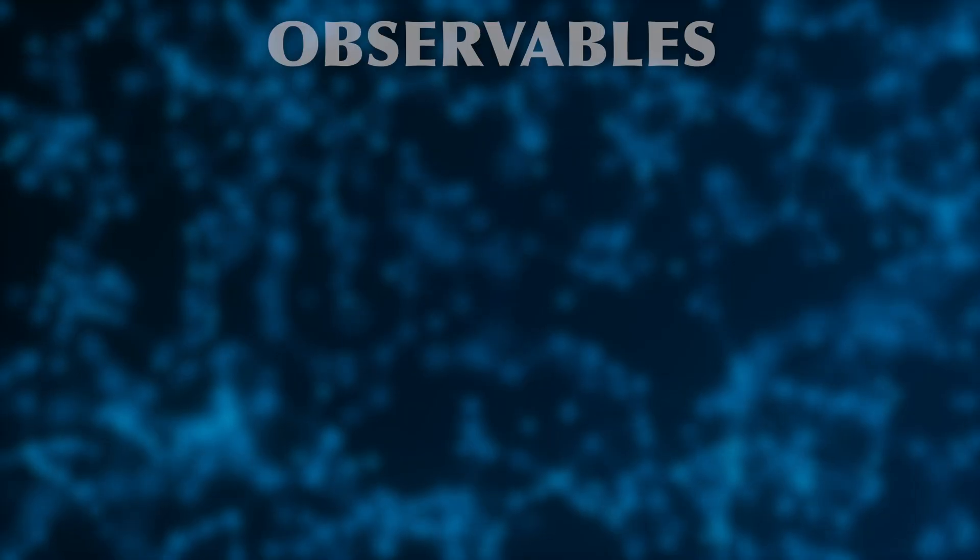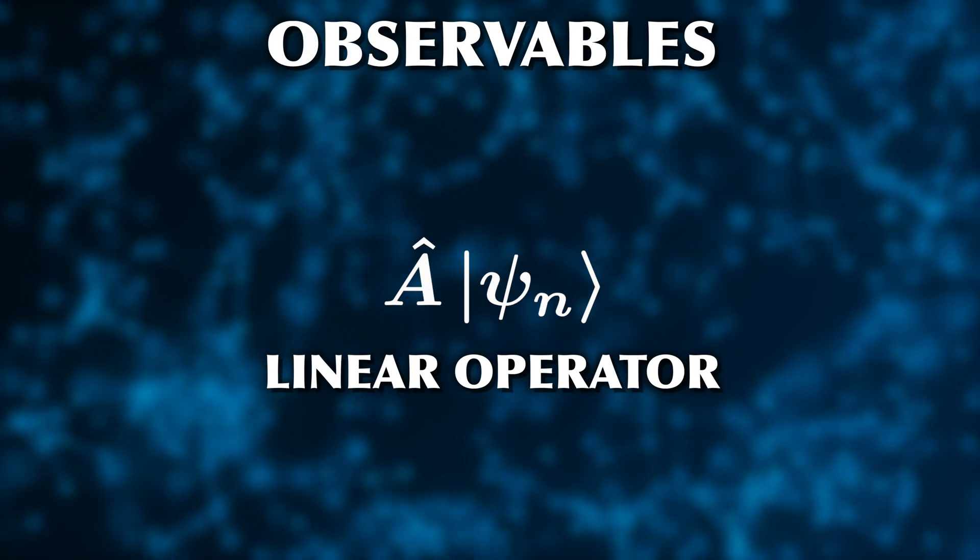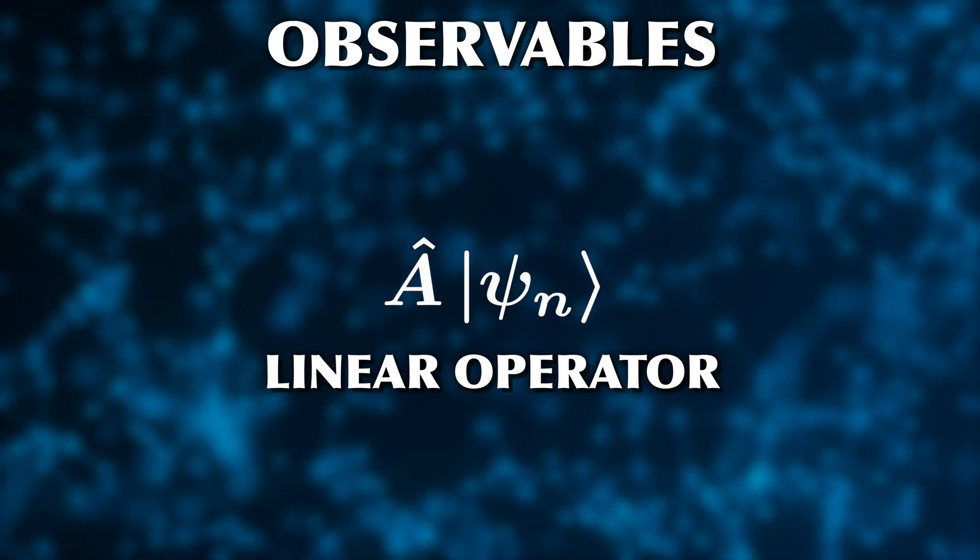Up until now, we've only been talking about the wave function, which is a mathematical object, and very little about physics. Every physical property that we can measure is called an observable, because we can observe it. In quantum theory, every observable is represented by a linear operator acting on a wave function, which will change it in some way.